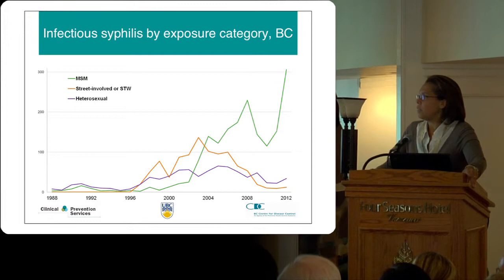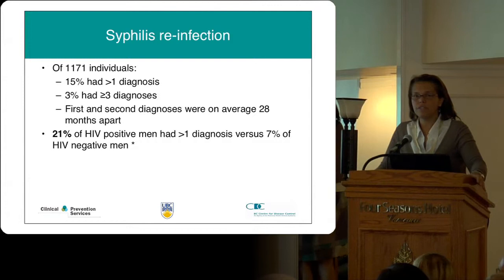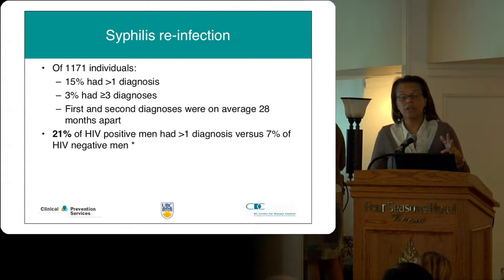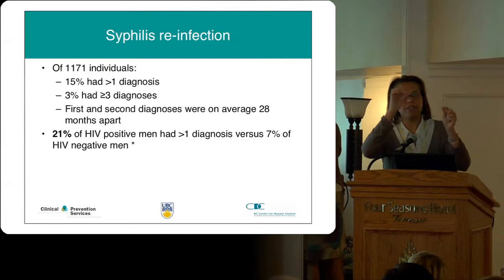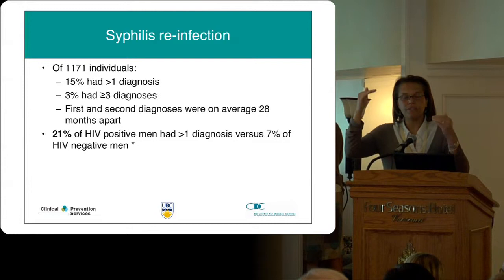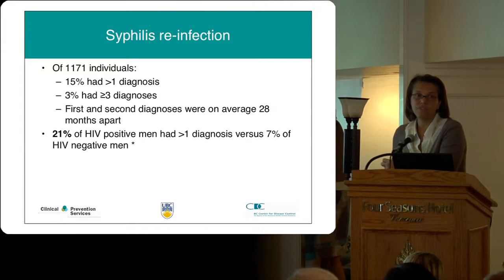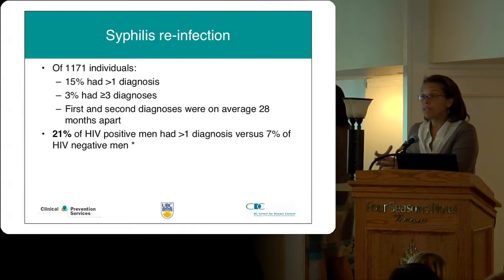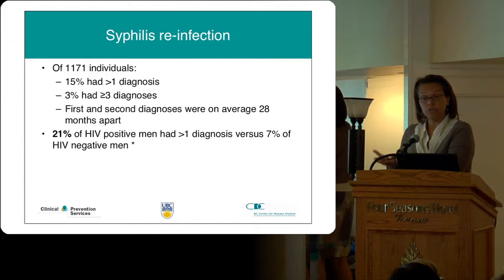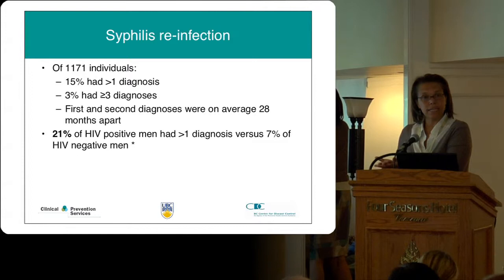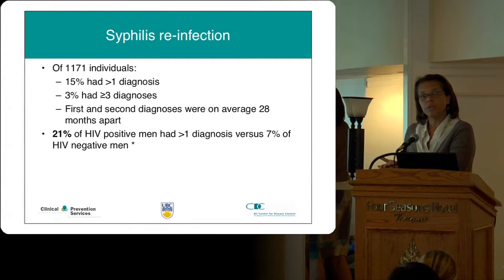I'll close on the concept of reinfection, which we're looking at very closely. With our chlamydia, gonorrhea, and syphilis rates, the number of folks who've been infected before, treated, and reacquired from different partners is increasing — representing a larger proportion of individuals with disease. With syphilis reinfection, 15% of clients who had syphilis last year actually had a previous diagnosis, and about 3% had had greater than three diagnoses. This underscores the role of prevention: if folks are re-engaging in the same dense sexual network with high disease prevalence, the risk for reacquiring is substantial.